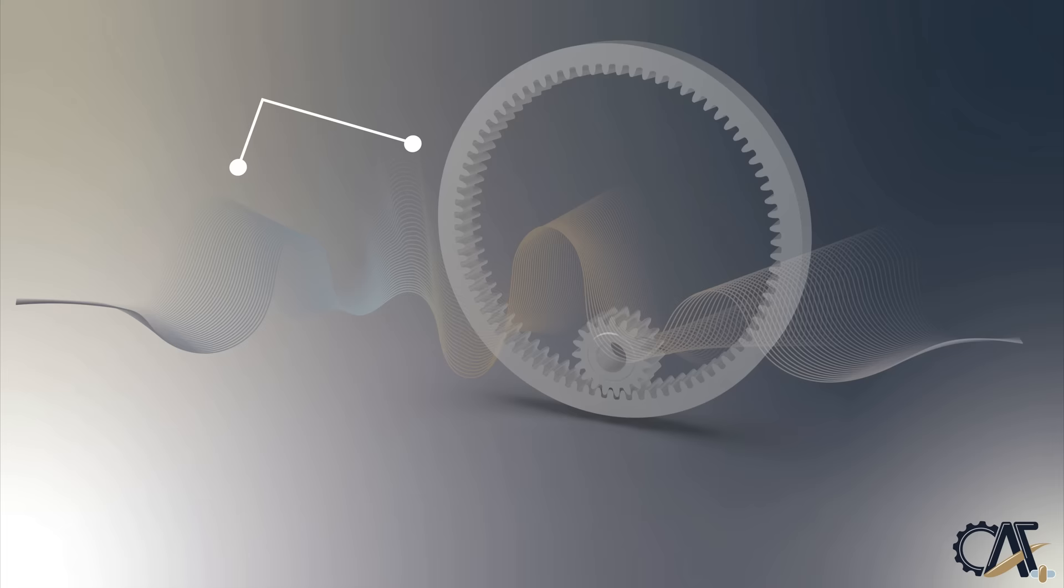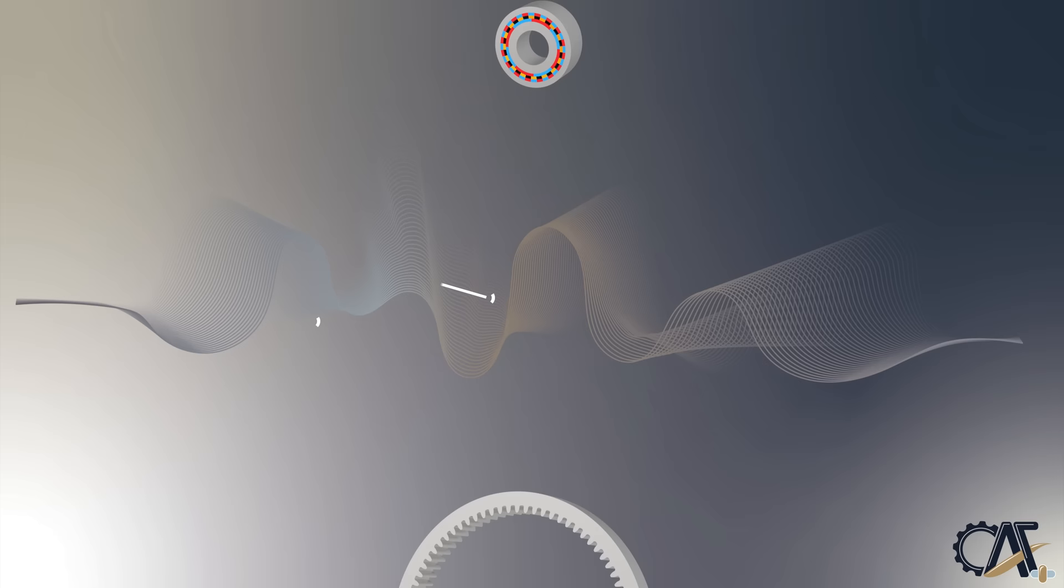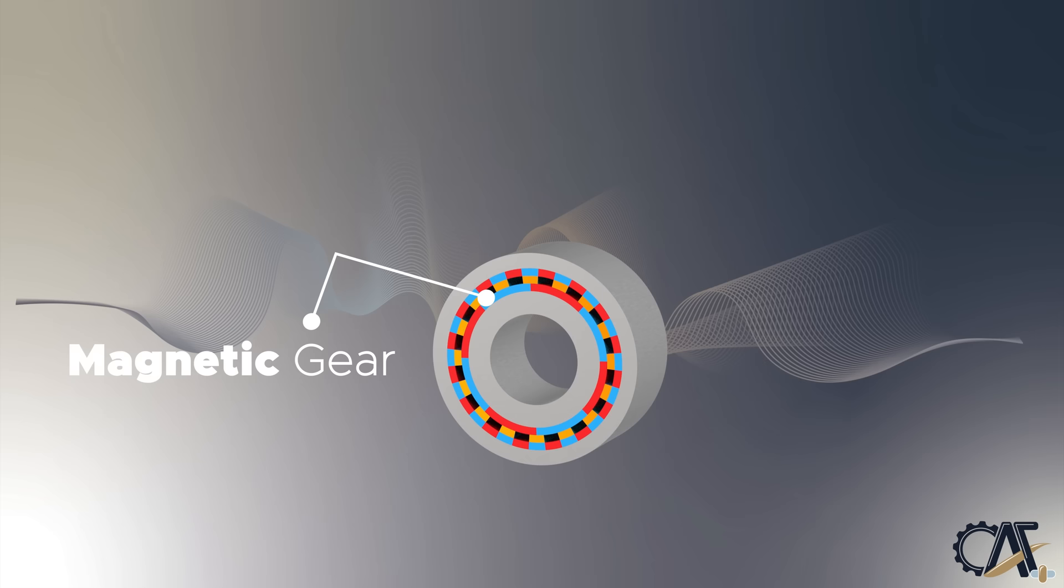The internal gear or ring gear has teeth inside of a ring rather than on the outside. A magnetic gear is similar to a mechanical gear in function but uses magnets instead of teeth.